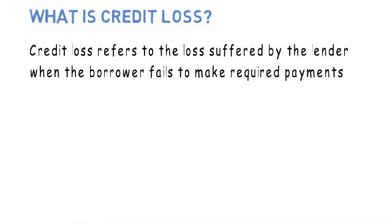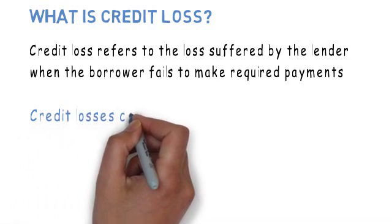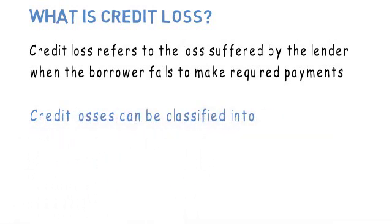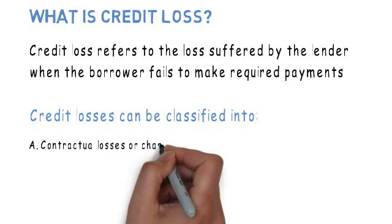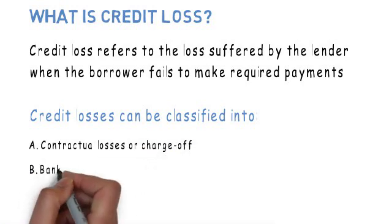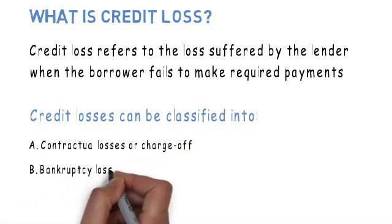Credit losses are typically classified into two types: first one is contractual losses or charge-offs, second is bankruptcy losses, and we will discuss both of these in more detail in upcoming videos.